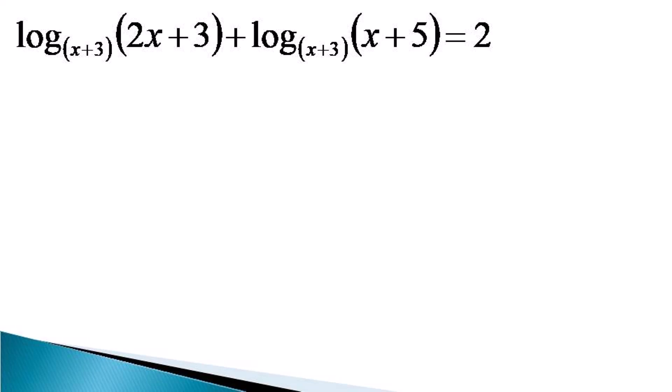First, we make use of the multiplication property of the log which gives the equation as log of 2x plus 3 into x plus 5 to the base x plus 3 becoming equal to 2.